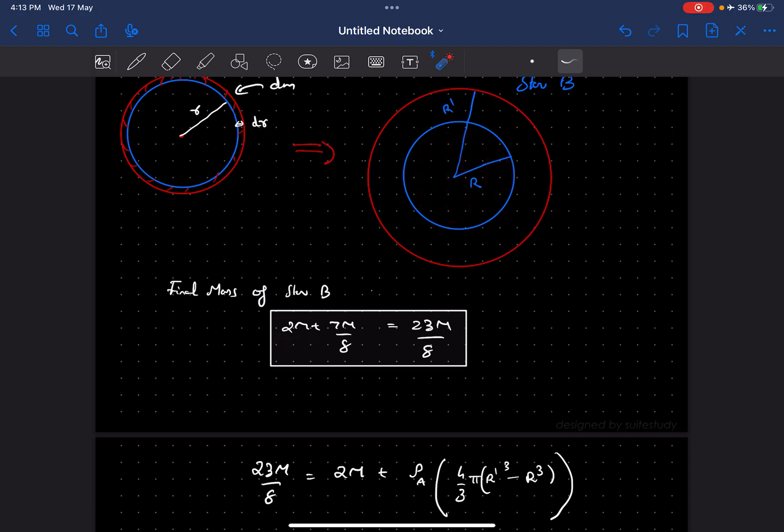And to that, the 7m by 8 mass that was deposited during the interaction process, and that is this red region. Finally if you add those two you'll get the answer as 23m by 8, which is the final mass of star B.